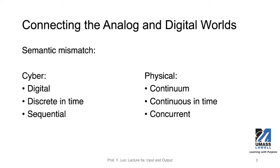The way we program our cyber systems is mostly using a sequential format. Programs have an entry point and follow the execution flow mandated by the algorithm you implement. Whereas in the physical world, things often happen at the same time — what we consider concurrent. So there are semantic mismatches: one side is digital, the other is continuum; one side is discrete, the other continuous; software execution is sequential, and physical processes are concurrent.